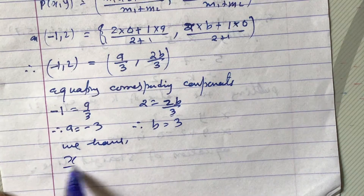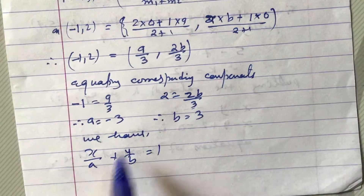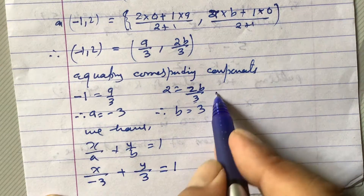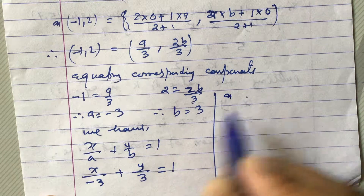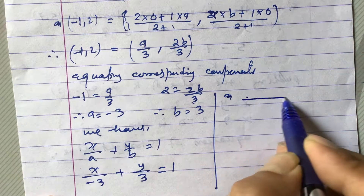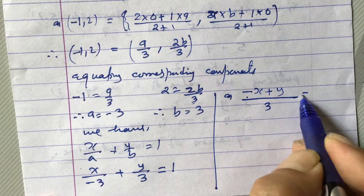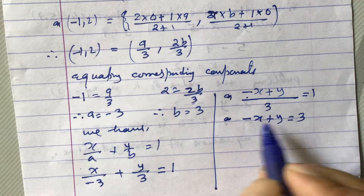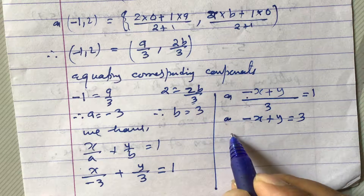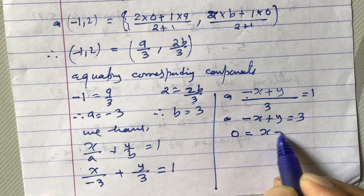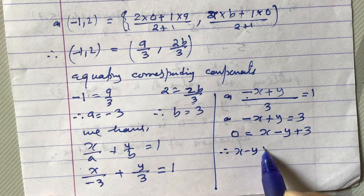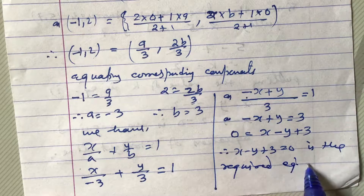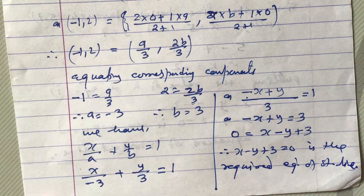Now using the intercept form, the equation is x by a plus y by b equals 1. Substituting a equals minus 3 and b equals 3: x by minus 3 plus y by 3 equals 1. Taking LCM, we get minus x plus y equals 3. Transposing, the required equation of the straight line is x minus y plus 3 equals 0.